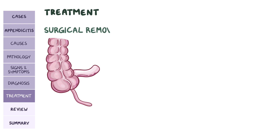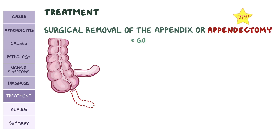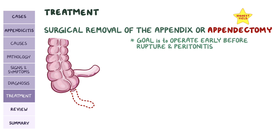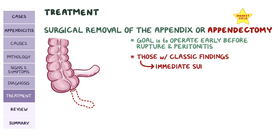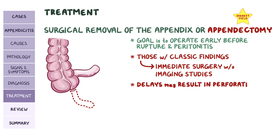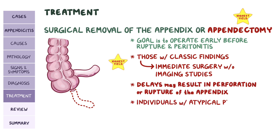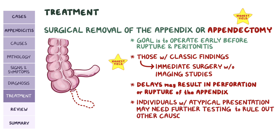The standard treatment for appendicitis is surgical removal of the appendix, or appendectomy. The goal is to operate early, before appendiceal rupture and peritonitis develop. Those with classic findings may be taken for immediate surgery without imaging studies, as delays may result in perforation or rupture of the appendix, while individuals with atypical presentation may need further testing to rule out other causes of abdominal pain.